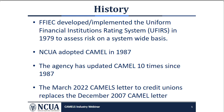The history of CAMEL started in 1979 when the FSIEC developed the Uniform Financial Institutions Rating System, or UFIRS, to assess risk on a system-wide basis. UFIRS was commonly referred to as CAMEL and later CAMELS. NCUA adopted the CAMEL rating system in 1987; up until then, NCUA used a framework called the early warning system.